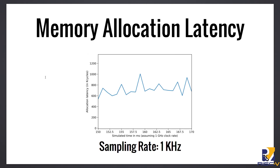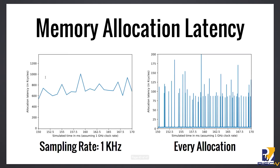If instead you have a system where you can actually instrument every single allocation, you get much more fine-grained data. This actually tells you something about what the allocator is doing — in this case, we can see that most allocations finish in a very short amount of time, and only some allocations take much longer. This is exactly what's happening in the memory allocator, because most allocations just take a block off the free list and give it to you, and every once in a while you run out of memory and need to allocate a new block, zero it, and add it to your free list. These results allow us to get a much deeper understanding of what's happening in the system.